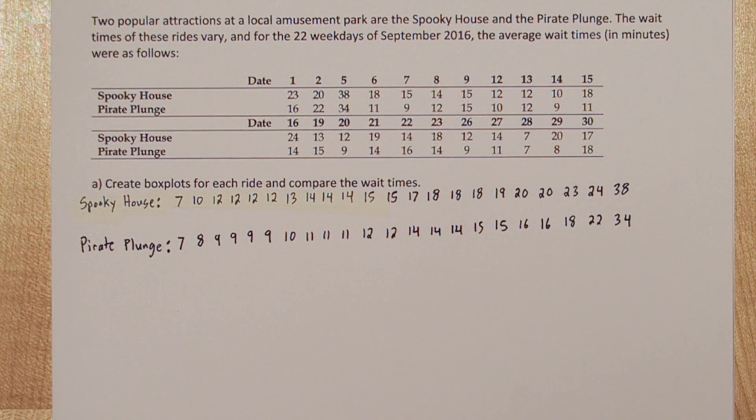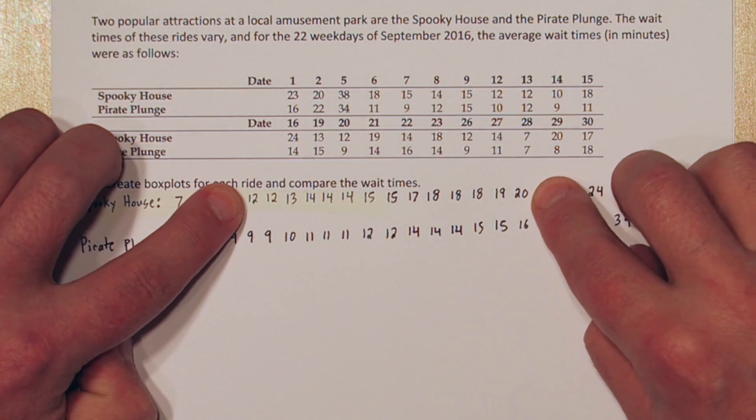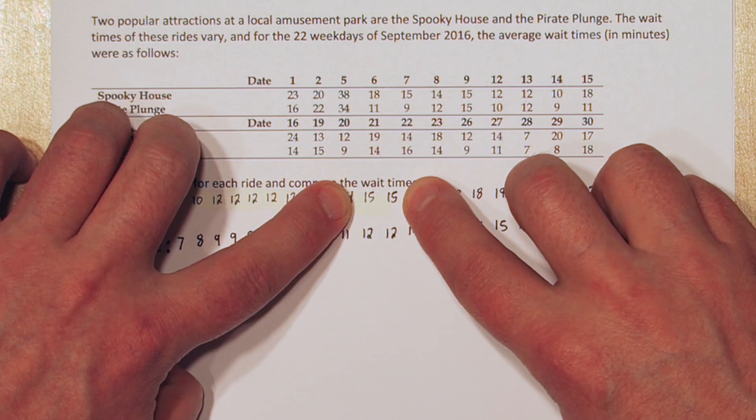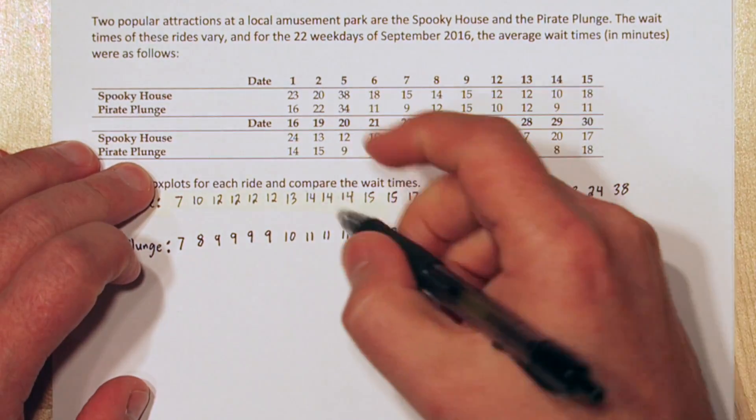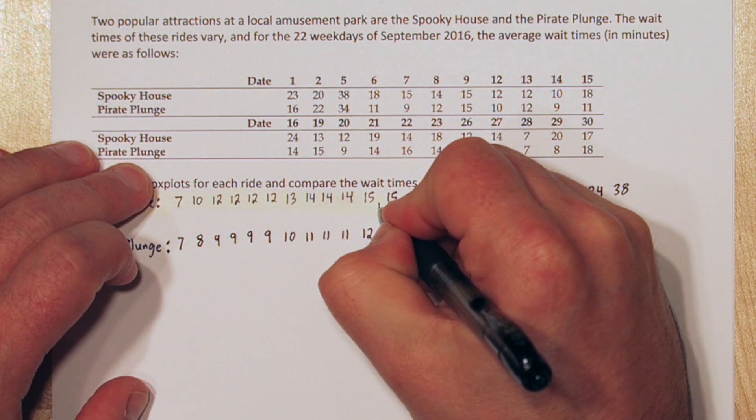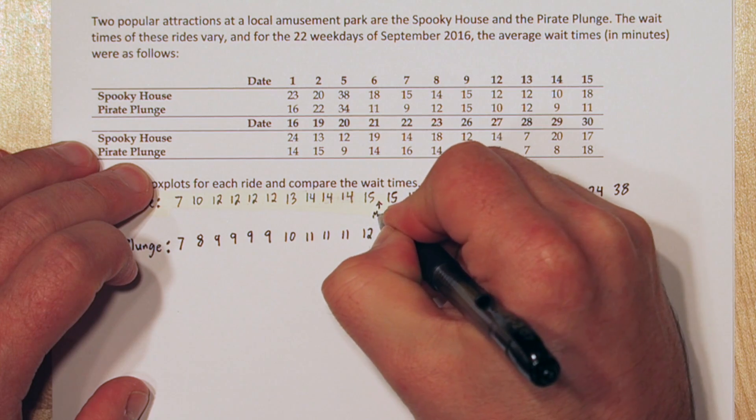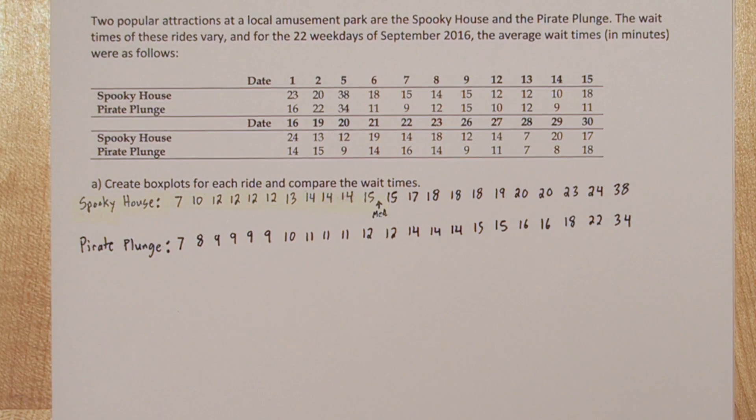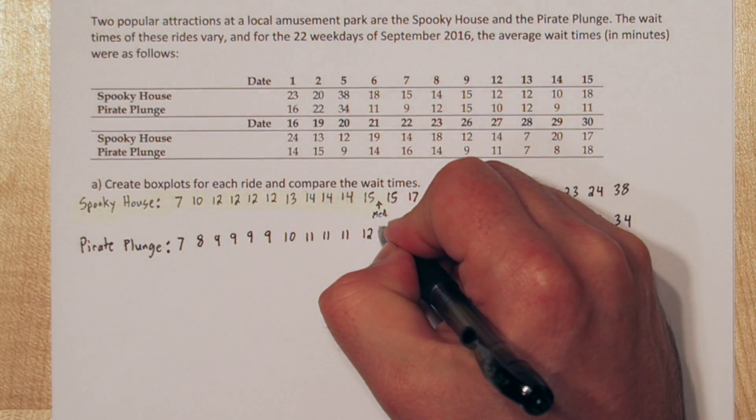Now it's time to find the five number summary. Let's start with spooky house. We need to find the median, so let's count in from the edges to the very middle number. The middle number is between these two 15s, so the average of two 15s is another 15. So here's the median. Since we lined our data up with Pirate Plunge, we can see that the median of Pirate Plunge is 12.